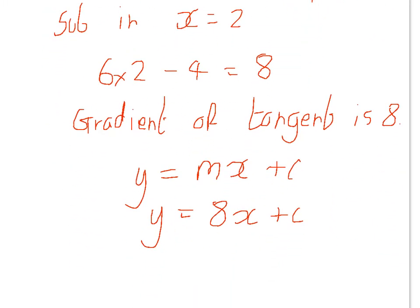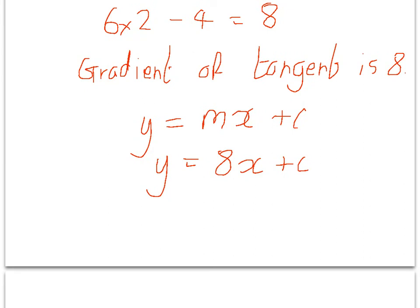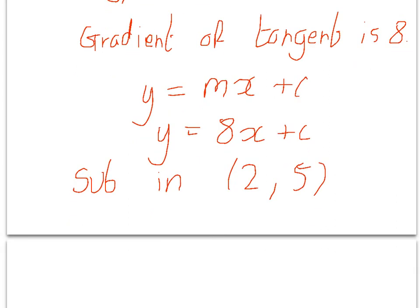But we're told that our tangent passes through the point (2, 5), so to find out what this constant value is, we're going to sub in (2, 5), and that will help us find the constant.